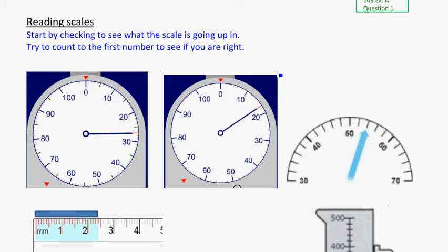Reading scales can be tricky sometimes until you kind of get the hang of it. The important part any time you're trying to read a scale is to check what it's going up in. Is each little hash on the scale going up in ones or twos or tens or hundreds? Fives? What's it doing?